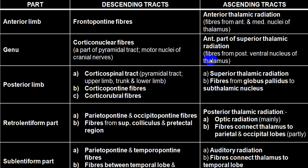Ascending tracts — mainly thalamic radiation coming from the thalamus, called thalamocortical tracts — run just posterior to the pyramidal tract in the posterior limb, and they end in the post-central gyrus, which is the sensory area. Most fibers run in the posterior limb, with small portions in the genu and anterior limb. Auditory fibers and optic radiation are posterior to the thalamic radiation.